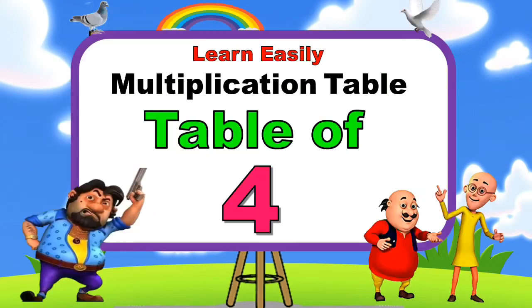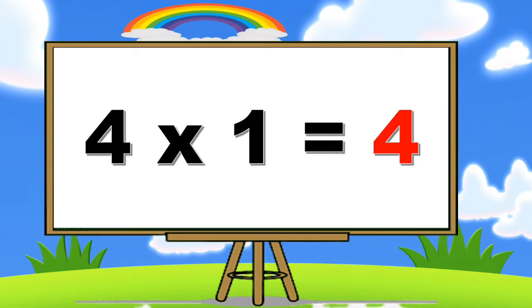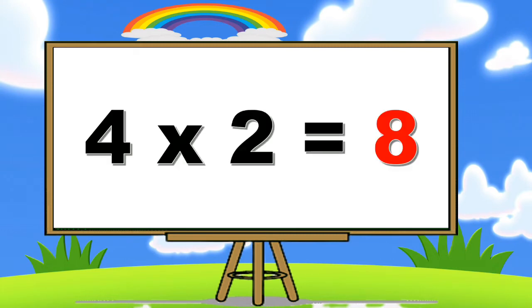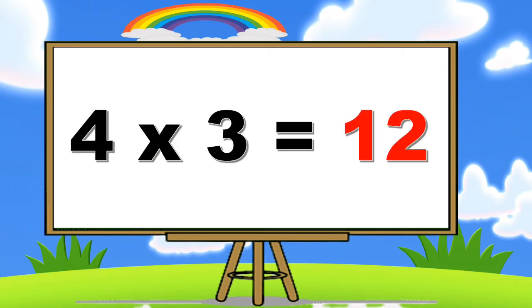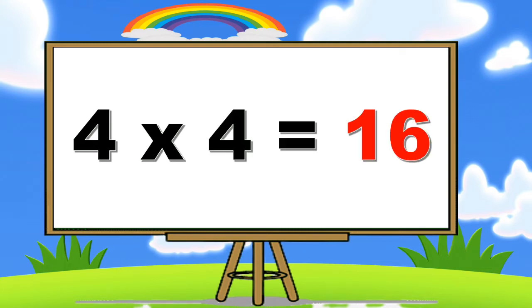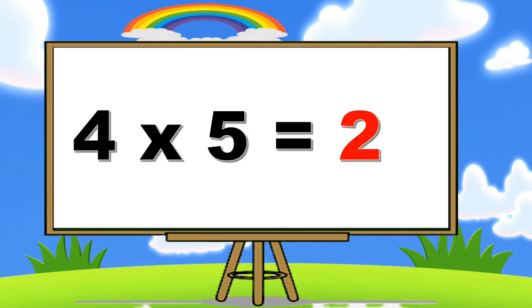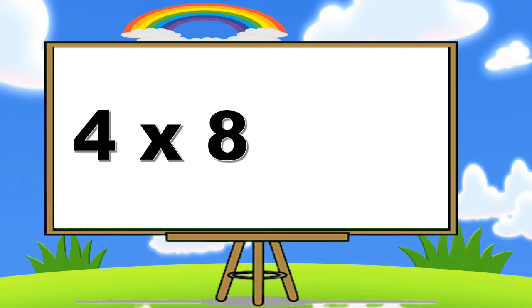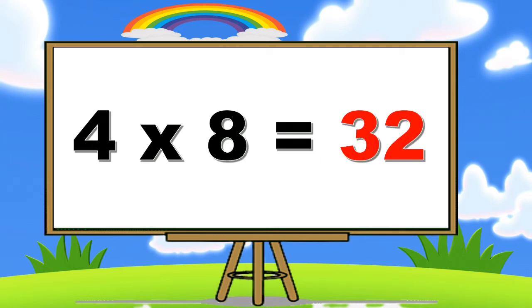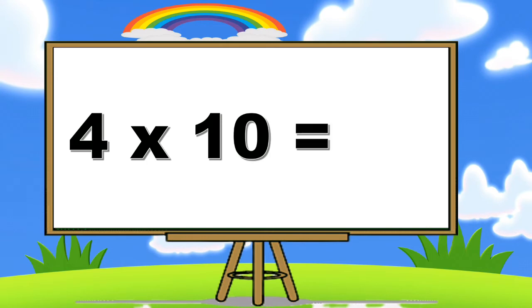Bye friends! Table of four. Four ones are four. Four twos are eight. Four threes are twelve. Four fours are sixteen. Four fives are twenty. Four sixes are twenty-four. Four sevens are twenty-eight. Four eights are thirty-two. Four nines are thirty-six. Four tens are forty.